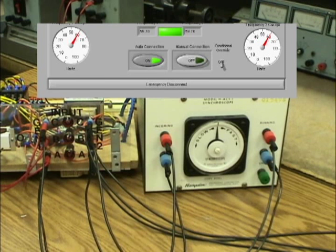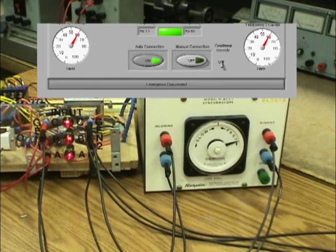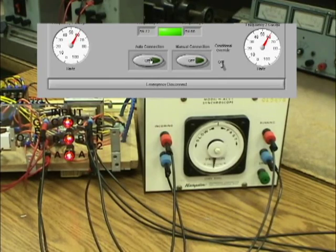Next, an emergency disconnect is made available to quickly disconnect the two generators by opening the relay through LabVIEW. When the emergency disconnect is pressed, the synchroscope needle rotates again to show the phase angle difference, verifying that the generators are not synchronized.